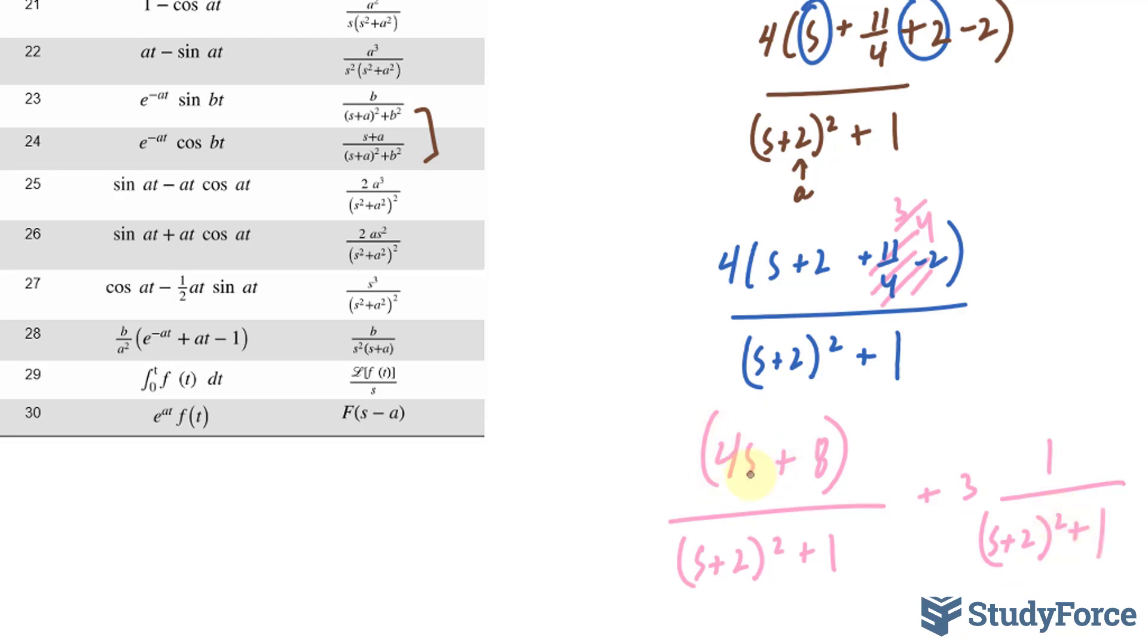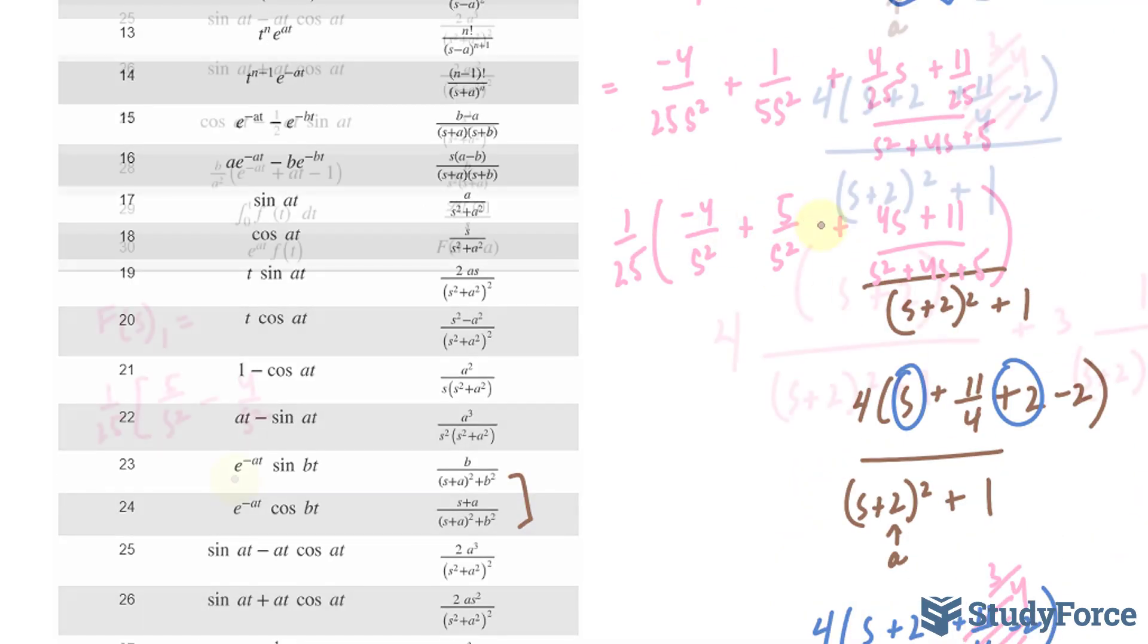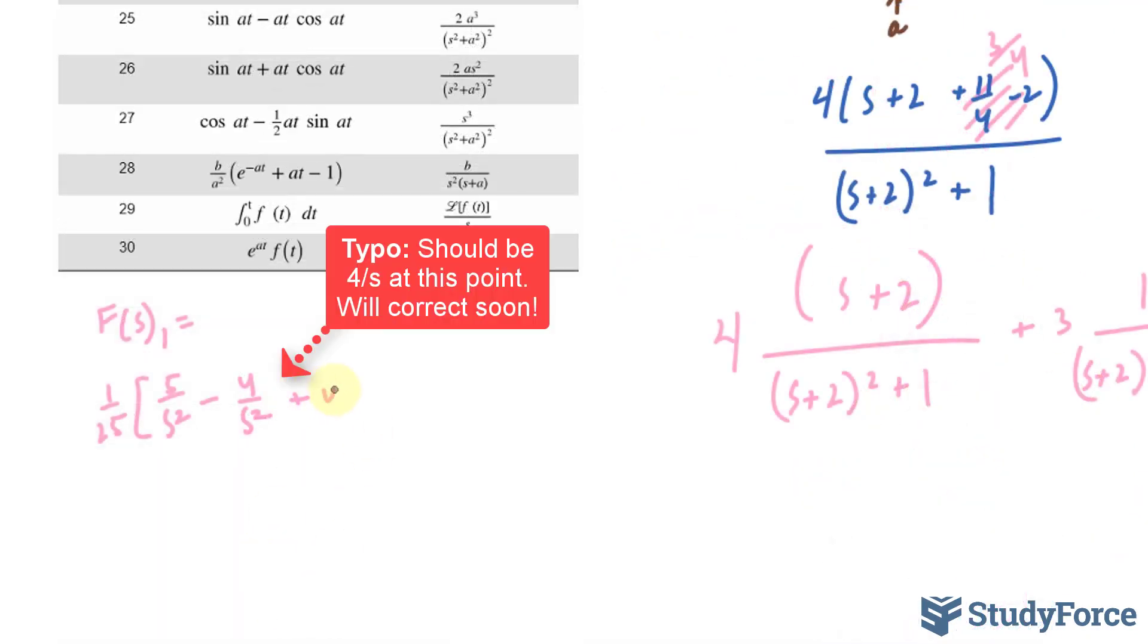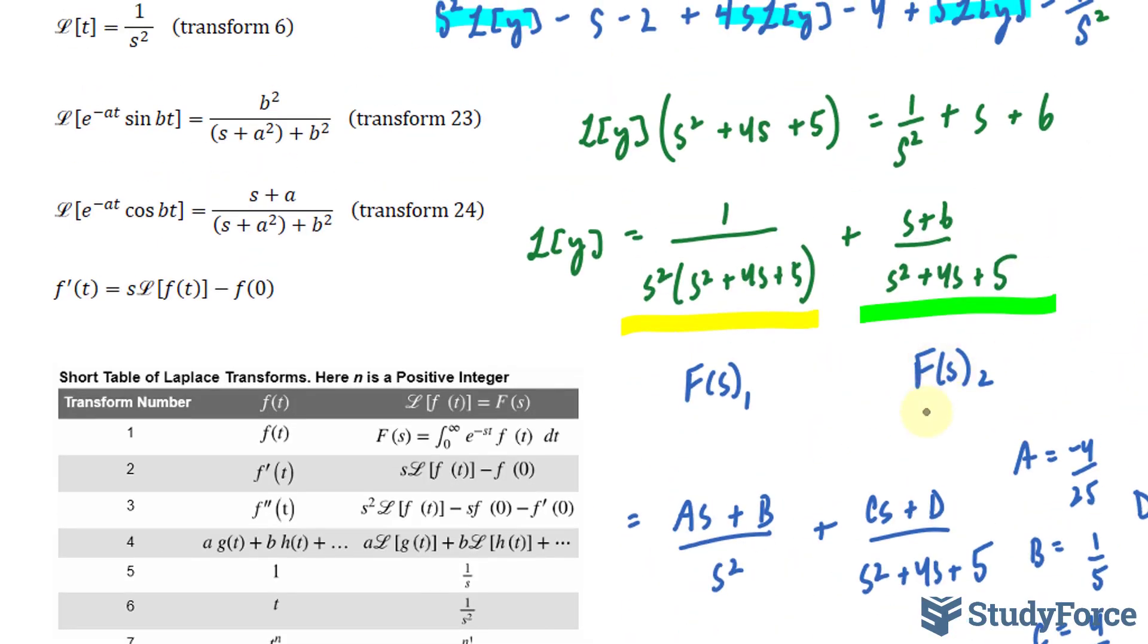Of course, you can factor out a 4 here to make things easier for you. Now we have perfect matches for these two fractions. Writing out f(s)_1, here's what it looks like. So let's take f(s)_1 is equal to 1/25. Don't forget these two. Plus 4 times this fraction. Plus this fraction. We still haven't finished f(s)_2 yet.